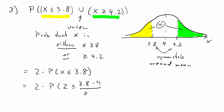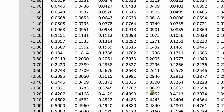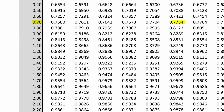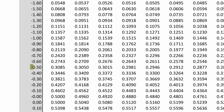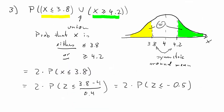We need to calculate two times the probability that x is smaller than 3.8. Translating into the z world: 3.8 minus 4 divided by 0.4 gives z = −0.5. So we need two times the probability that z is smaller than −0.5. Looking up the table, that probability is 0.3085. Multiplying by 2 gives 0.617, approximately 62%. That is the probability that x is either smaller than 3.8 or larger than 4.2, given that x is normally distributed with mean 4 and standard deviation 0.4.